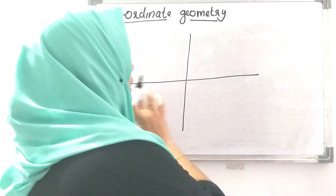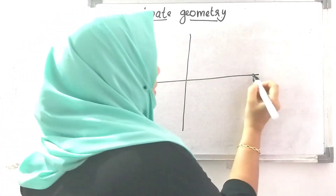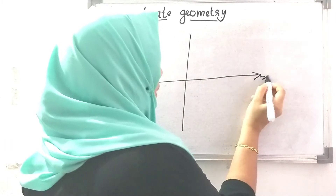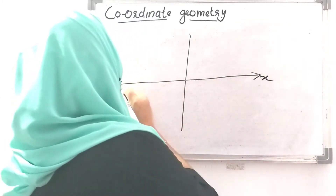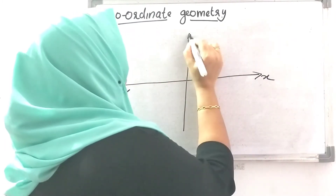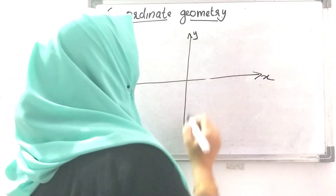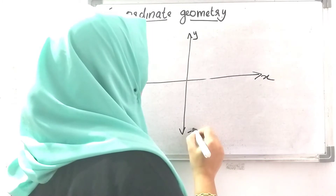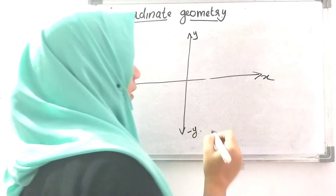The horizontal line is the x-axis and the opposite direction is the minus x-axis. The vertical line is the y-axis and the opposite direction is the minus y-axis.